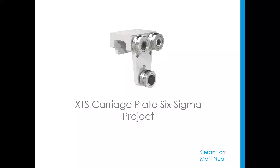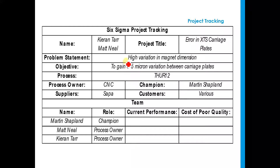Now this is the project. It's a carriage plate, so what we're looking at is the frame at the back rather than the bearings that have been assembled onto it, and they have a problem with a particular tolerance — a particular dimension. Just before we look at the run chart, something to say about the problem statement: it would be great if it was much better. 'High variation in the magnet dimension' — it would be much better if they stated the defect rate and quantified the variability in the magnet dimension.